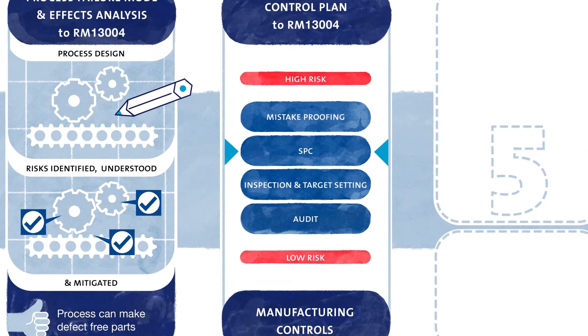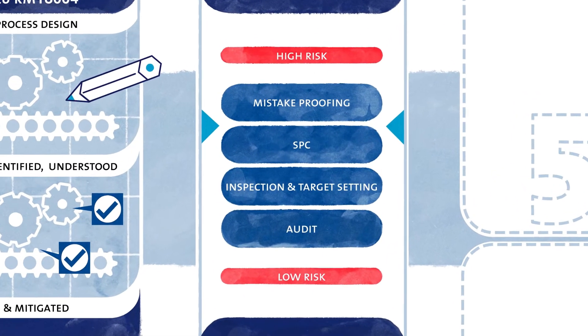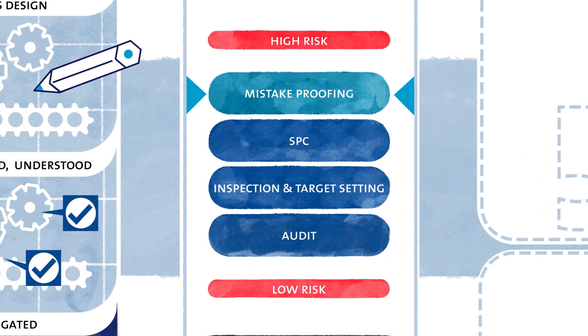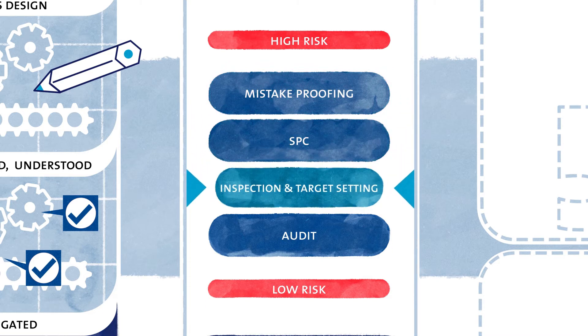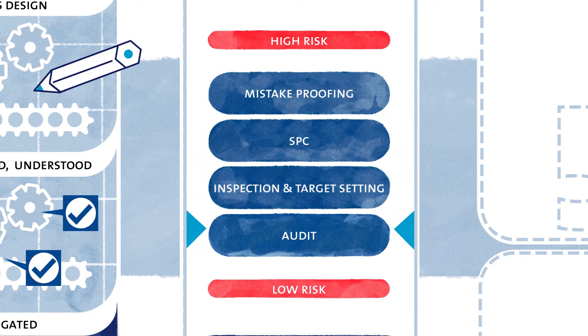For high severity risks, we must strive for mistake-proofing, while we can address other risks through statistical process control, inspection or audit. All this is captured in the control plan.